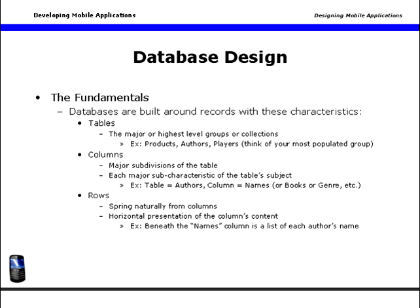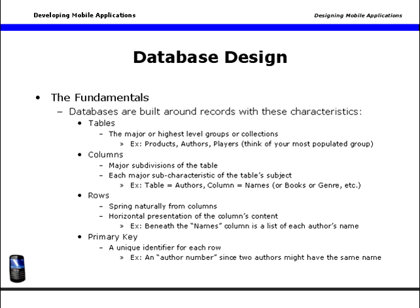All databases feature a primary key, which is a unique identifier for each row. For example, your author table might have an author number as a primary key, since two authors could have the same name.